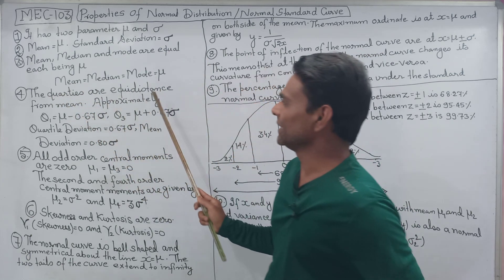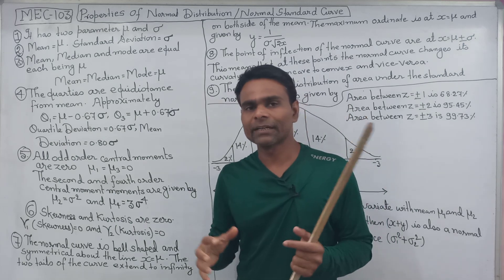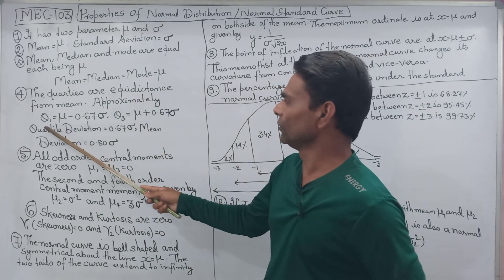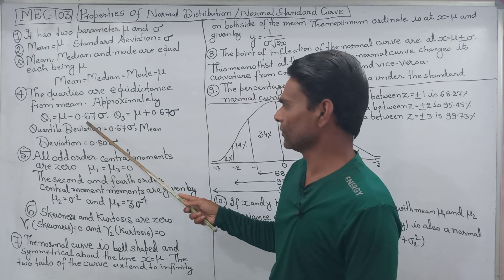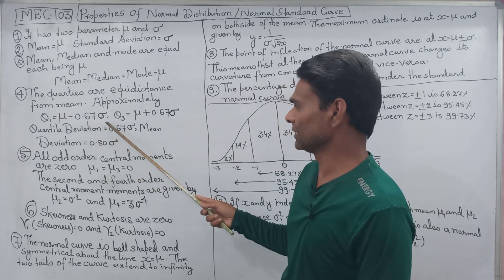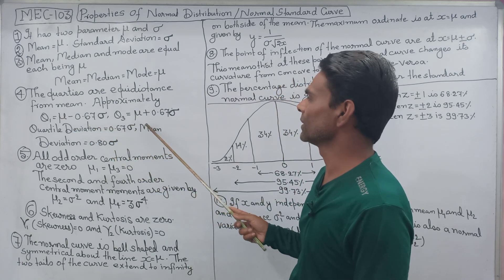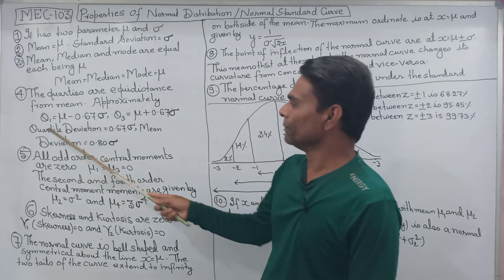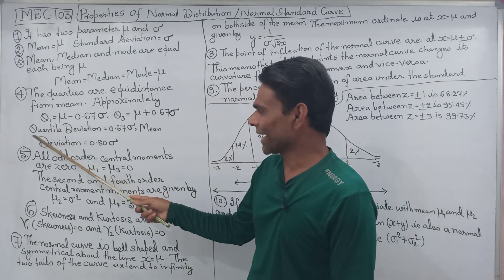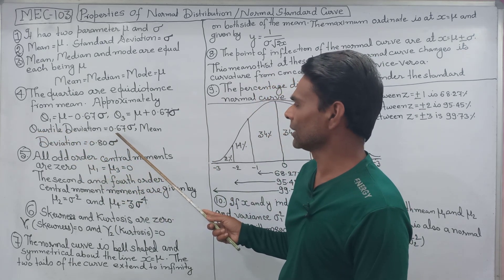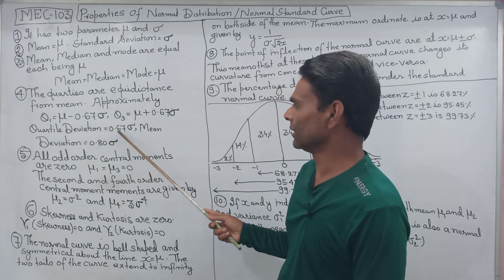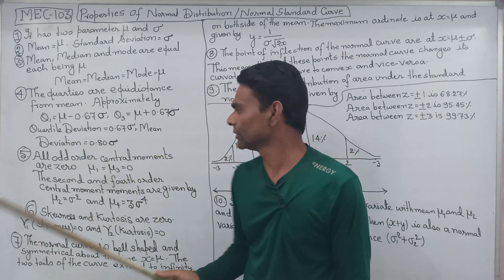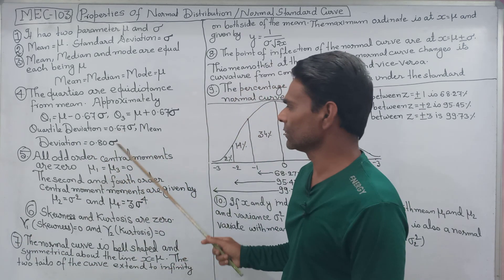Quartiles are at equal distance from the mean. Q1 = mu minus 0.67 sigma, and Q3 = mu plus 0.67 sigma. The quartile deviation value is 0.67 sigma.